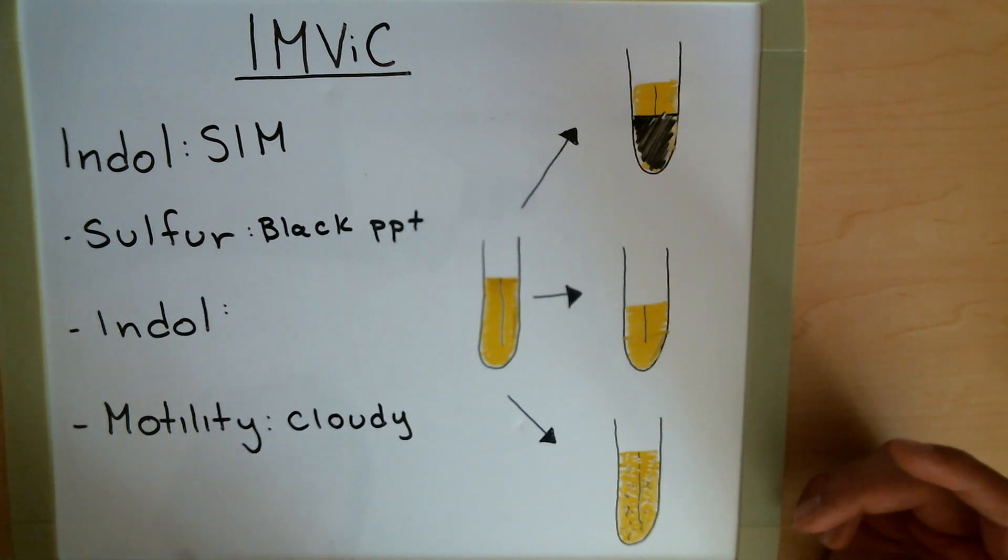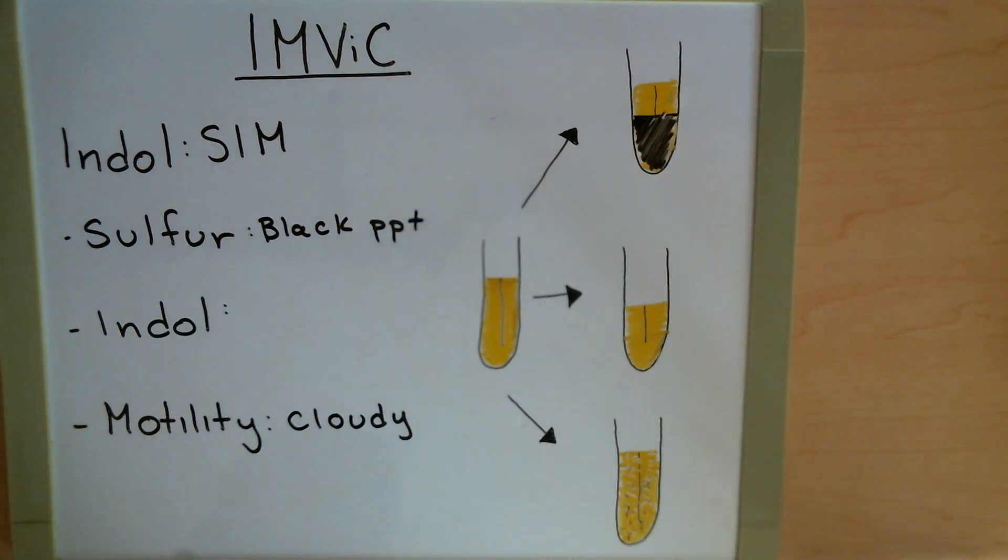If you have something where you have a bit of growth exuding out from the stab site, then that's something that you would want to ask your lab professor. But for the most part, if it's just a little bit surrounding the stab area, then that's just bacterial growth, not an indication of motility. But now lastly, the thing that we're all interested in: indole.